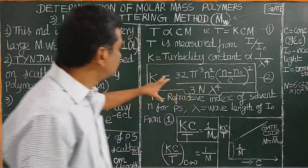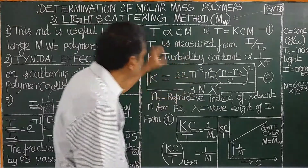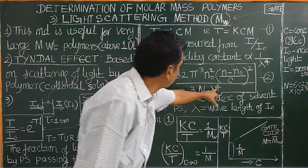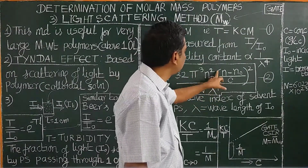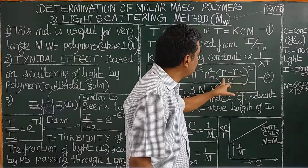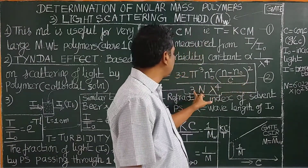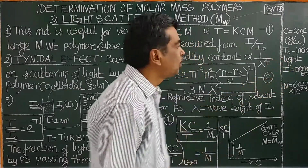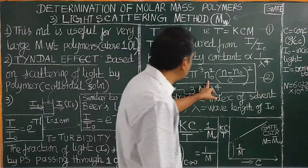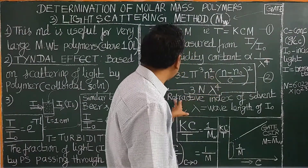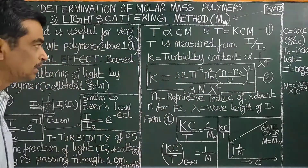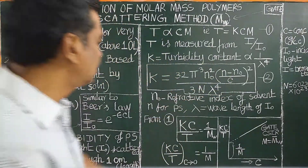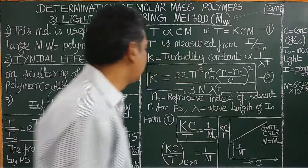This is the expression used to determine the turbidity constant K: K = 32π³n₀²(n − n₀)² / (3Nλ⁴), where N is Avogadro's number, n₀ is the refractive index of the solvent (reference liquid), n is the refractive index of the polymer solution, and λ is the wavelength of incident light.